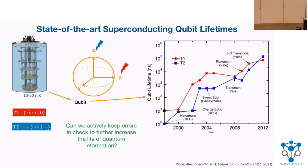Can we actively keep these errors in check while they're happening and decrease the error probability on our qubits? This question was positively answered by Peter Shor in terms of quantum error correction — an error correcting code — in 1994.